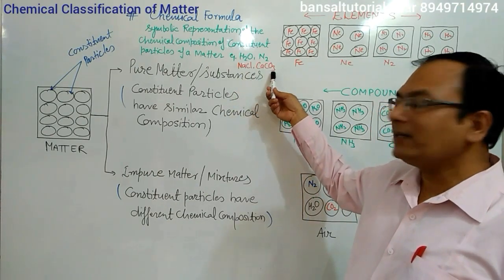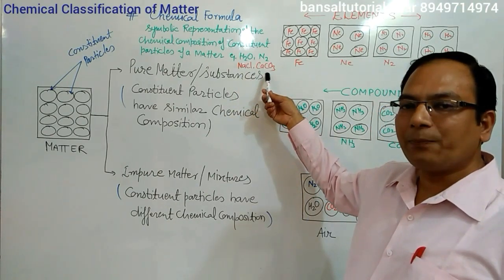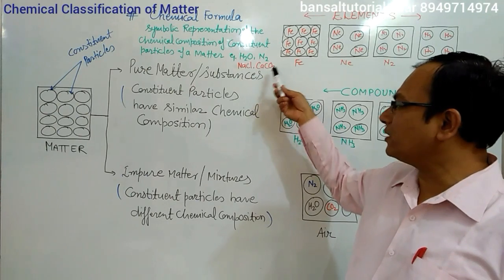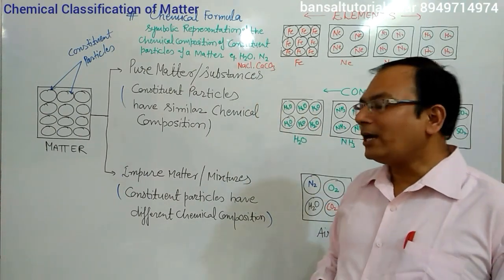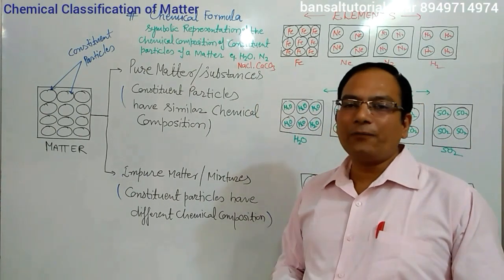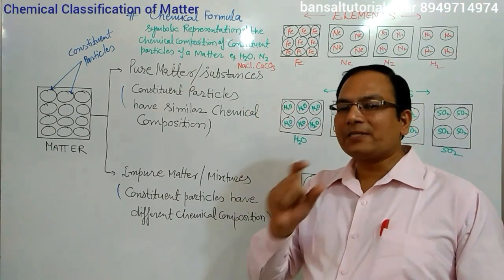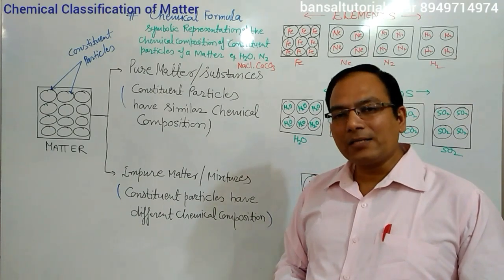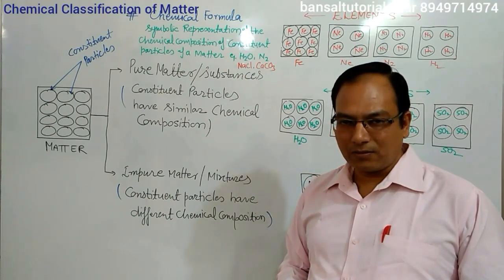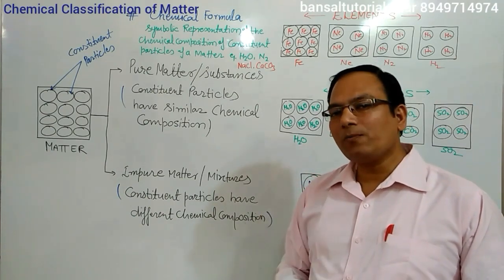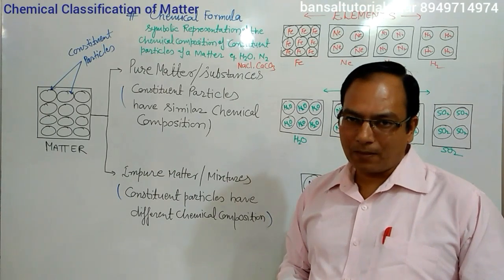Calcium carbonate, that is marble, is composed of calcium, carbon and oxygen. So, a chemical formula is a short form of representing a chemical substance, which also shows the composition of that matter.